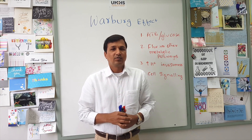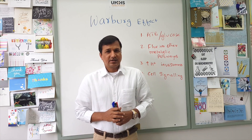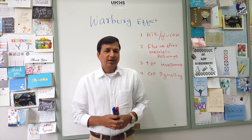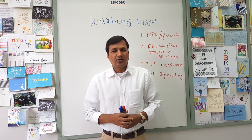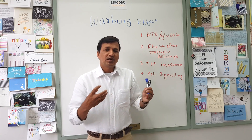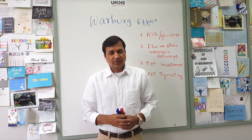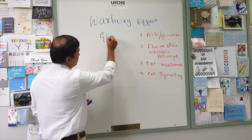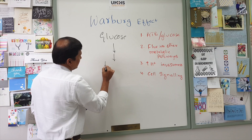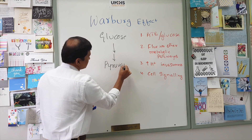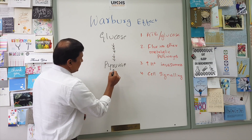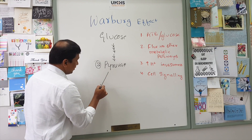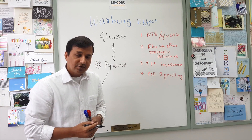What exactly happens in the Warburg effect? As we all know, glycolysis is the breakdown of glucose into pyruvate. The fate of pyruvate depends on whether the cell has mitochondria and sufficient oxygen, or if the cells do not have mitochondria or do not have sufficient oxygen.